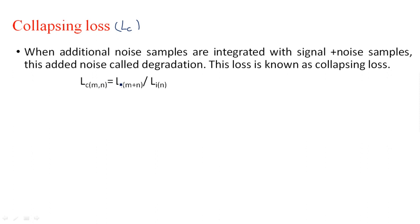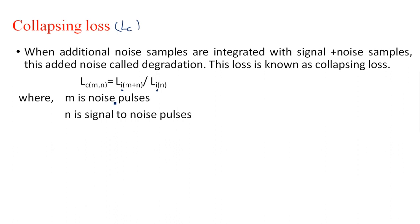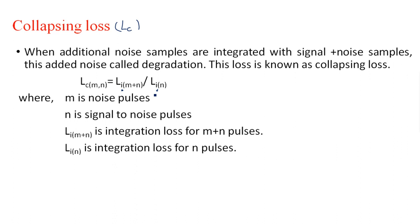The collapsing loss Lc is given by: Lc = Li(m+n) / Li(n), where Li is the integration loss, m is the number of noise pulses, n is the signal-plus-noise pulse count, Li(m+n) is the integration loss for m+n pulses — which indicates the collapsing loss — and Li(n) is the integration loss for n pulses.